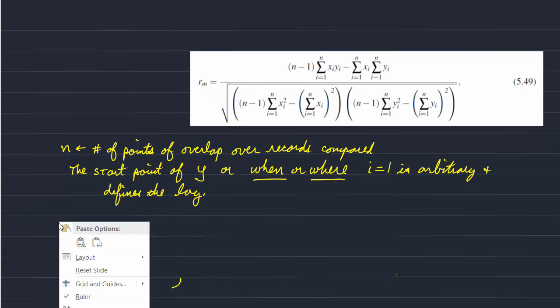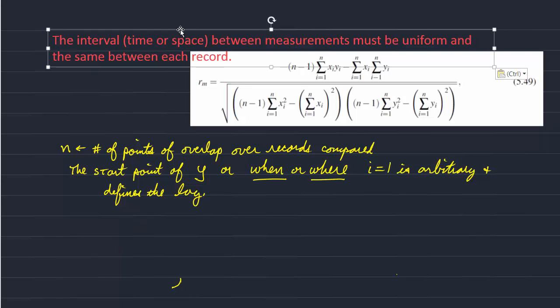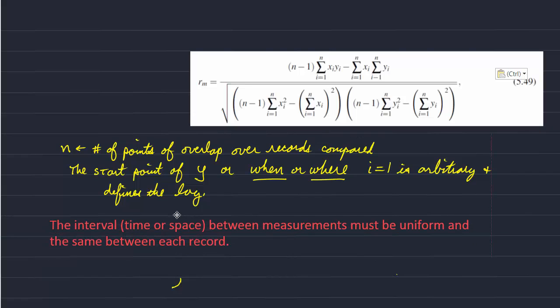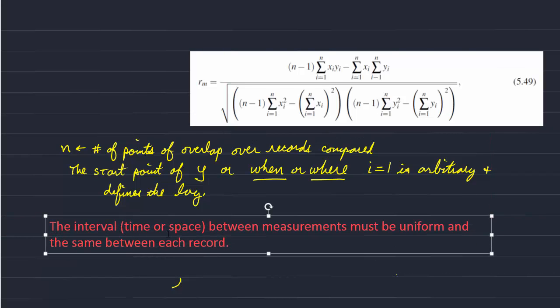And the main requirements are that the interval in time or space between the measurements must be uniform in both records. And that interval must be the same between the two records.